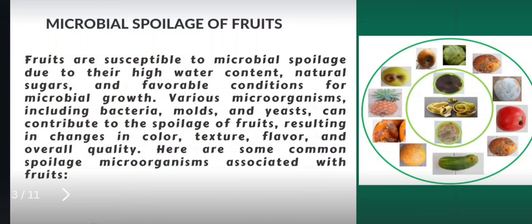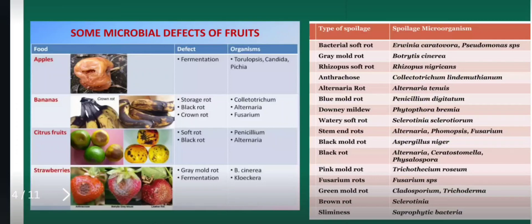These are some of the factors which attract microbial spoilage — for example, color, texture, flavor, water content, nutritive value, and the type of fruit, which has different spoilage microorganisms. Here you can see the variety of microorganisms reported to cause various diseases or infections.